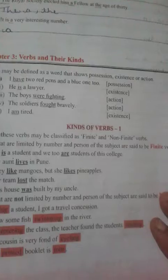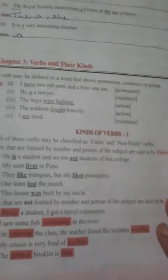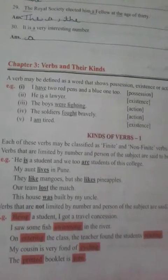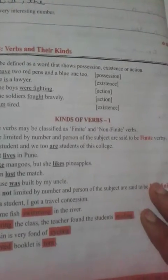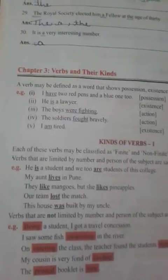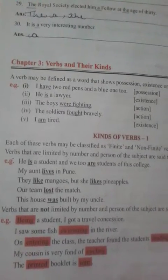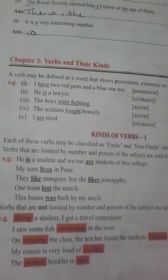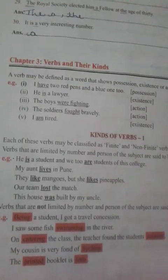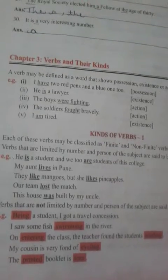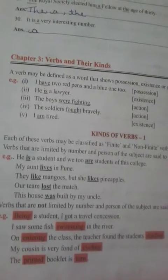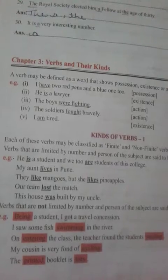So kinds of verbs — let us see first. Each of these verbs may be classified as finite and non-finite verbs. Verbs that are limited by number and person of the subject are said to be finite verbs. For example: 'He is a student' and 'We are two students of this college.' The finite verbs are 'is' and 'are'.